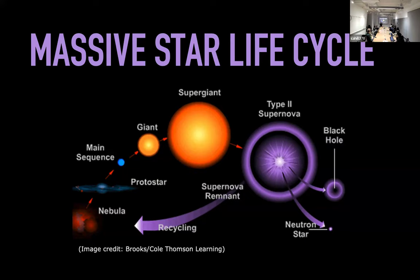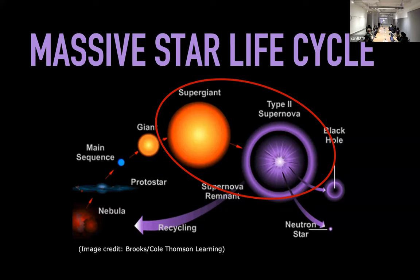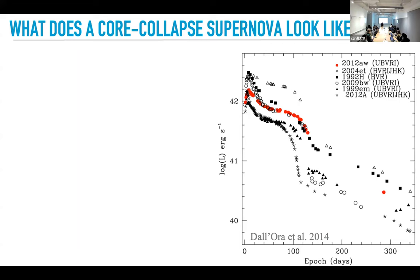That material gets recycled back into the interstellar medium and the cycle keeps going. I'm particularly interested in what we can learn from observations of Type II supernovae by understanding the structure of the stars that die — what the supergiant stars impart on that explosion and how they affect our interpretations of the observations.